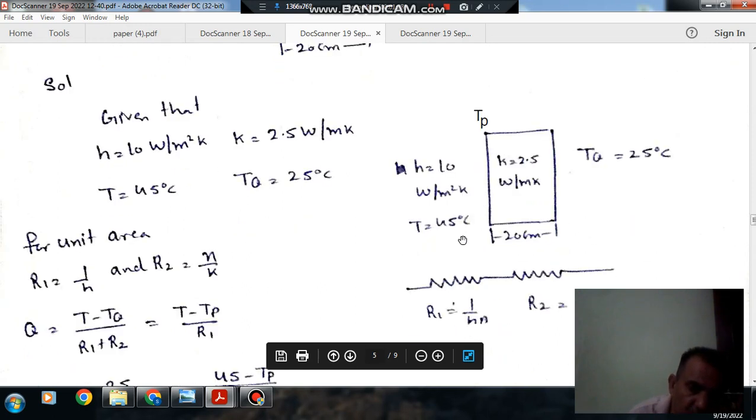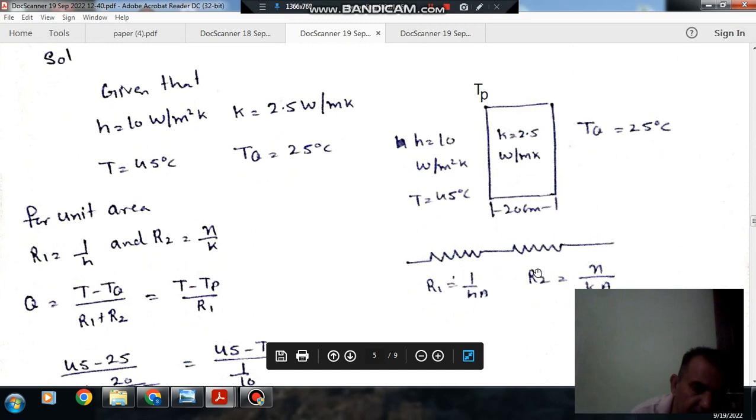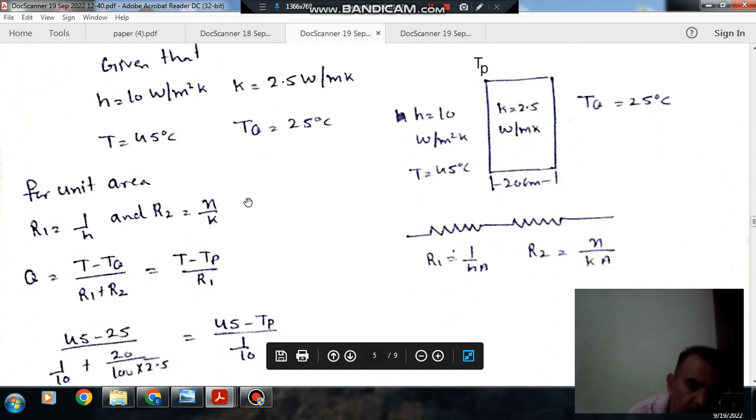Here there are two resistances to heat flow. First resistance is convective resistance, 1 by HA, and the other resistance is conductive resistance, X by KA. X is 20 centimeters, K is 2.5, and A is 1 unit.